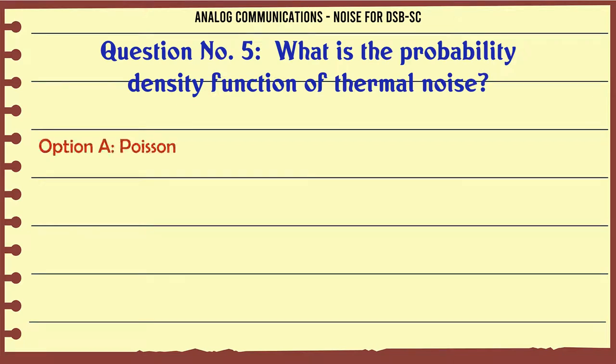What is the probability density function of thermal noise? Option A: Poisson. Option B: Gaussian. Option C: binomial. Option D: Bessel. The correct answer is Gaussian.